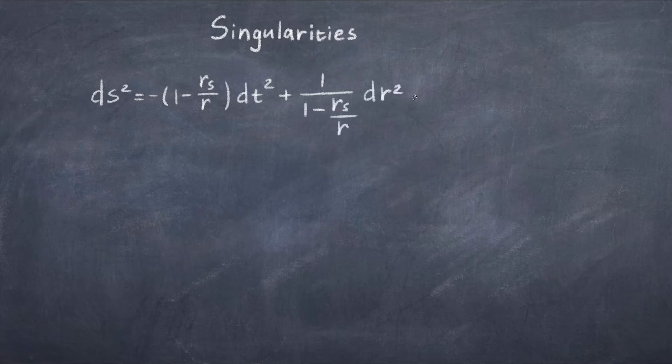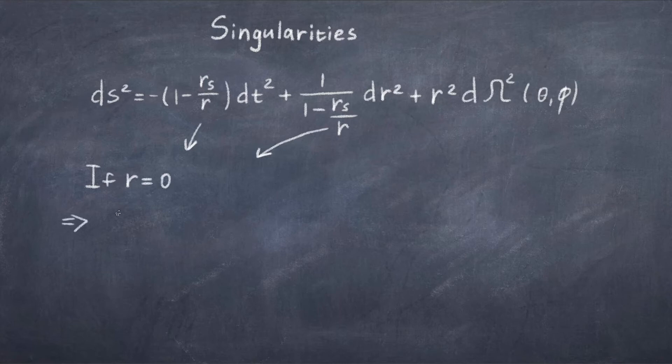The first singularity we find if we set r equal to zero, as you will get division by zero in both the time and the radial term. The second singularity is if r is equal to rs, because we get again division by zero in the radial term.